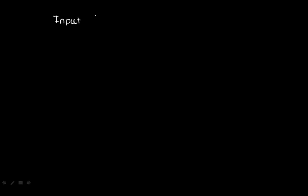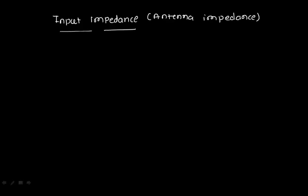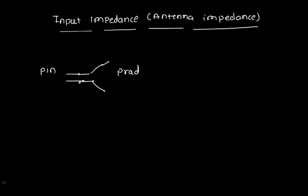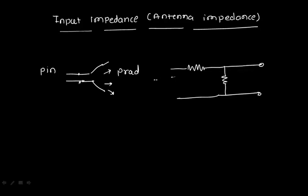Input impedance, or antenna impedance — in earlier sessions we saw the equivalent circuit of an antenna. When you give power to an antenna, there is radiated power at the input terminals. Drawing the equivalent circuit, we have the loss resistance and the radiation resistance. The input power given to the antenna is not fully radiated; some loss is represented by the loss resistance, and the power delivered to free space is represented by the radiation resistance Rr.